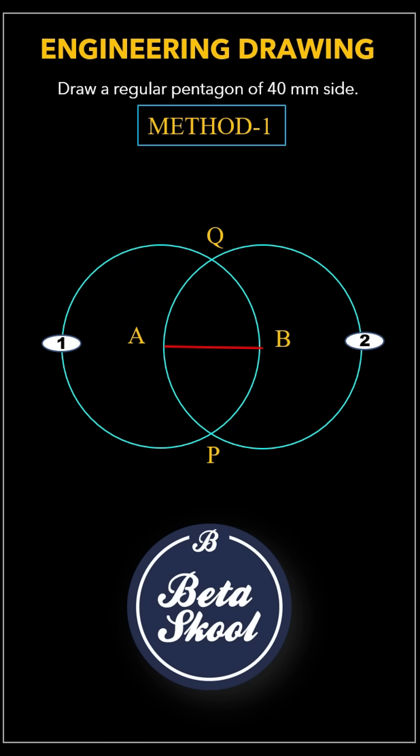These two circles will intersect at two points. Label those points of intersection as P and Q. Now, with point P as the center and the same radius AB, draw an arc that intersects circle 1 and circle 2. Mark the intersection points as R and S respectively.